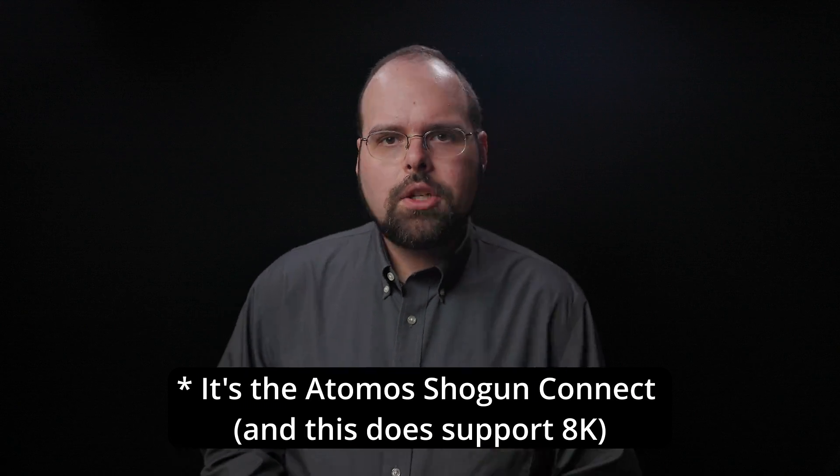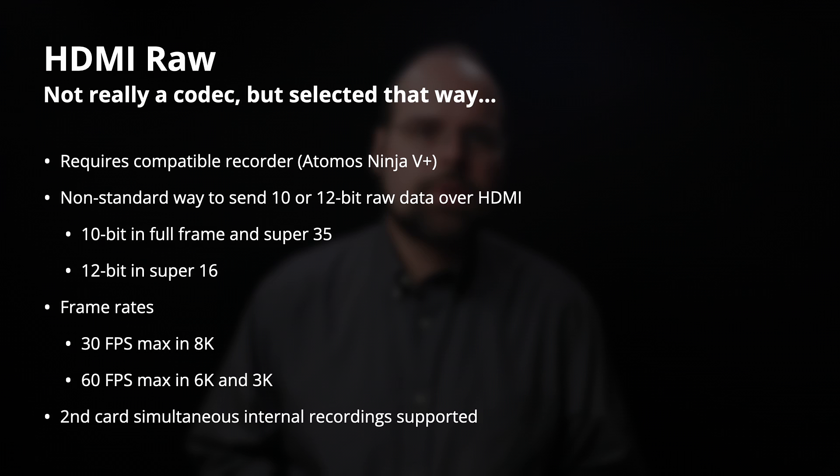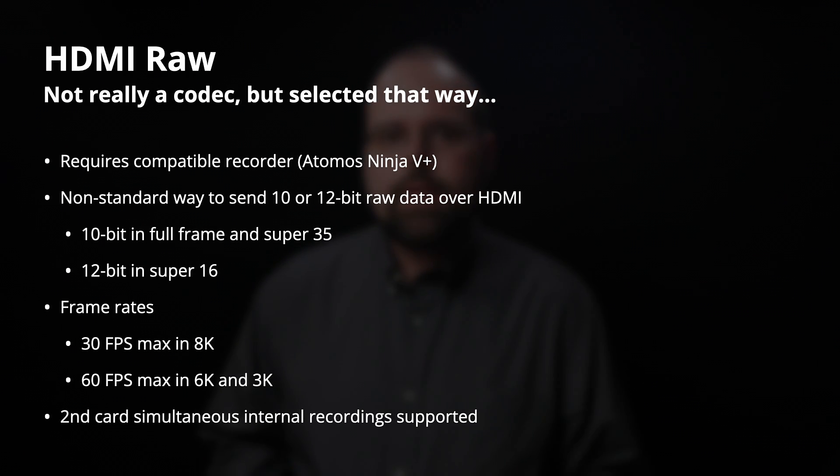You'll need a Ninja 5 Plus to record 8K; the Ninja 5 can only record 3K and 6K from the R5C. In Super 16 mode (3K) you get 12-bit up to 60fps; in Super 35 mode you get 10-bit up to 60fps; and in full frame or 8K mode you get 10-bit at a maximum of 30fps. The R5C can also record simultaneously to an in-camera card as a backup or proxy file.